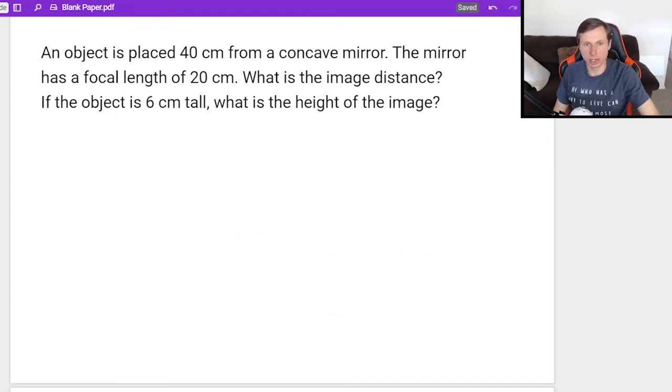Okay, so here's the first one. An object is placed 40 centimeters from a concave mirror. The mirror has a focal length of 20 centimeters. What is the image distance? If the object is 6 centimeters tall, what is the height of the image?